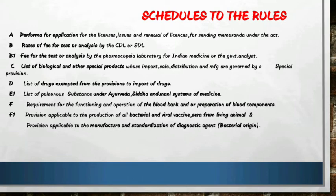Schedule E1 to the rules is the list of poisonous substances under the Ayurveda, Siddha and Unani system of medicine.